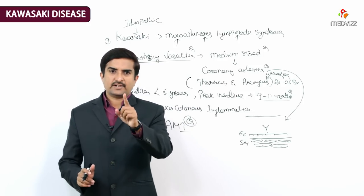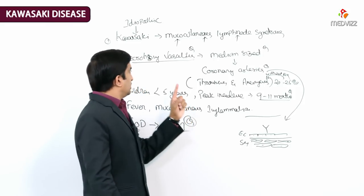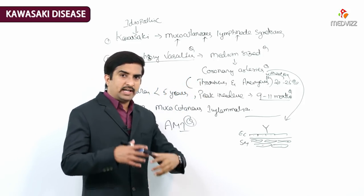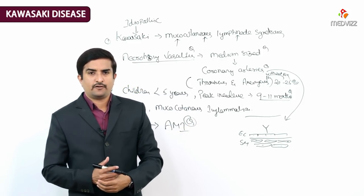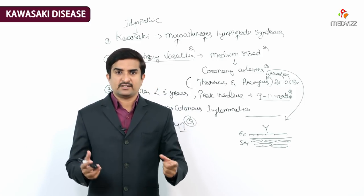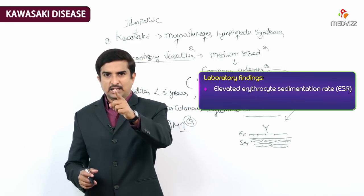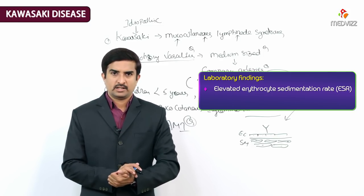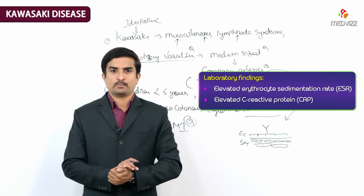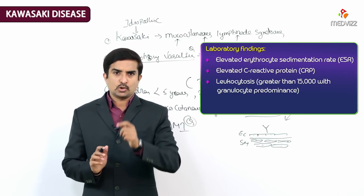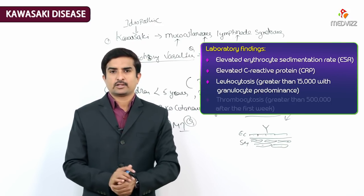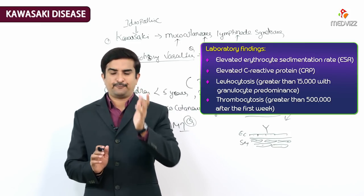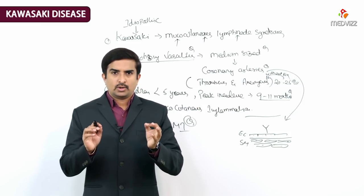The laboratory findings in Kawasaki disease include elevated ESR (erythrocyte sedimentation rate), elevated C-reactive protein, leukocytosis, and thrombocytosis, due to the necrotizing vasculitis and extensive inflammatory infiltrates.